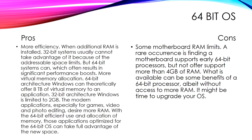For more efficiency: when additional RAM is installed, 32-bit systems usually cannot take advantage of it due to addressable space limits, but 64-bit systems can, often resulting in a significant performance boost. For virtual memory allocation, 64-bit Windows can theoretically offer 8.8 TB of virtual memory to an application, while 32-bit Windows is limited to 2 GB. Modern applications — especially for video and photo editing — increasingly demand more RAM.